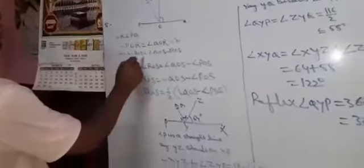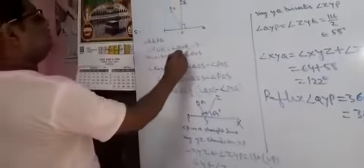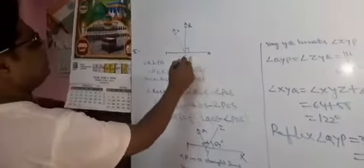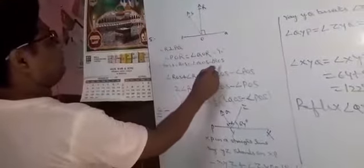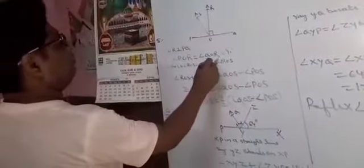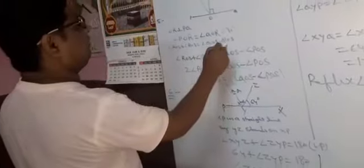Those two angles are angle POS plus angle ROS, and also angle QOR. If in angle QOS we substitute angle ROS, then angle QOR comes. That means we can write: angle POS plus angle ROS is equal to angle QOS minus angle ROS.